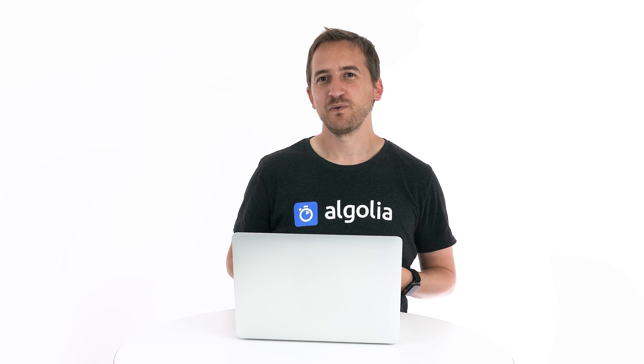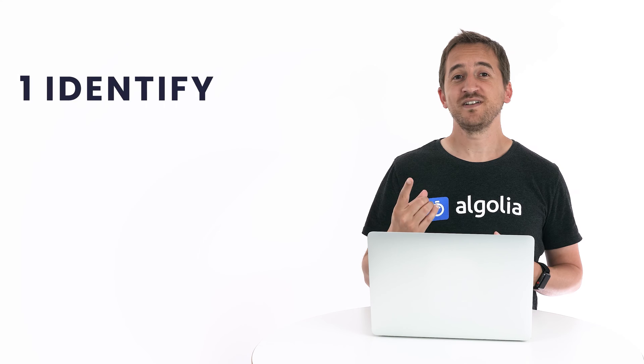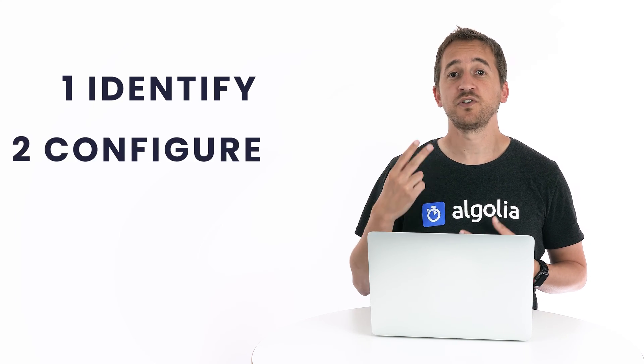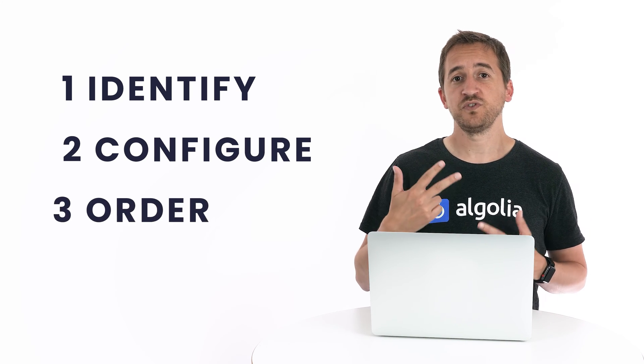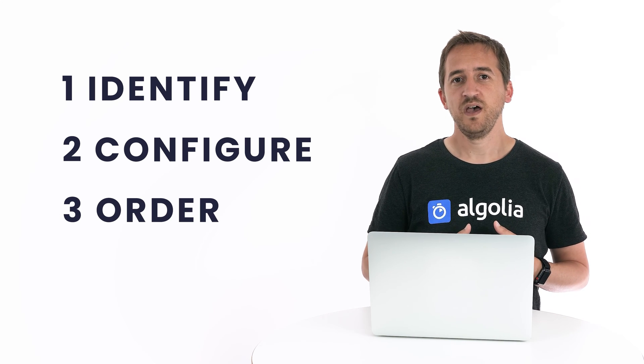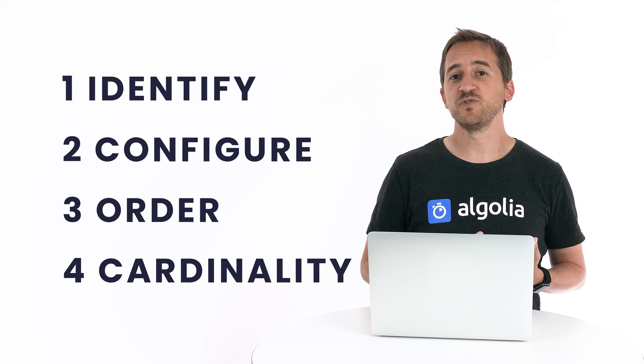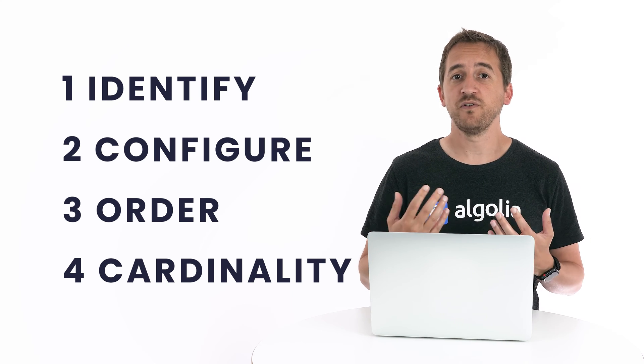Time to get a bit deeper. We've seen how to cover the basics with one business attribute, but the great thing about custom ranking is that you can use more than one to offer your users a much richer relevance. When you have more than one useful business metric, there are four steps to follow to create a smart custom ranking. First, identify all attributes that should influence the global ranking. Second, configure each attribute as ascending or descending. Third, order those attributes by importance. And fourth, make sure that all attributes except the last one have a low cardinality.